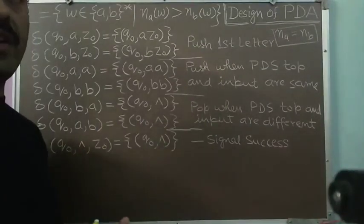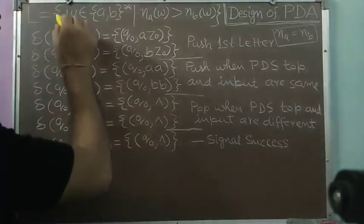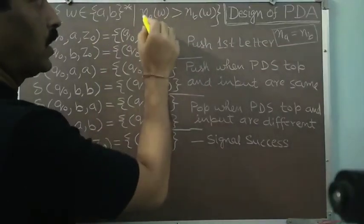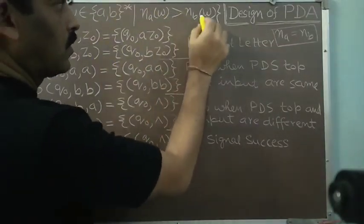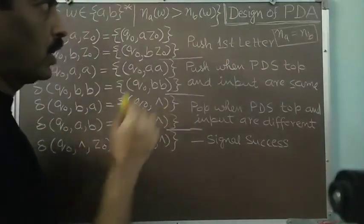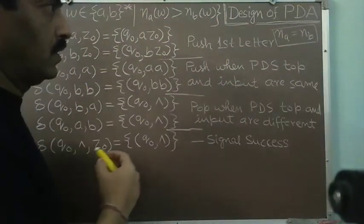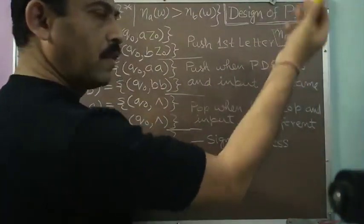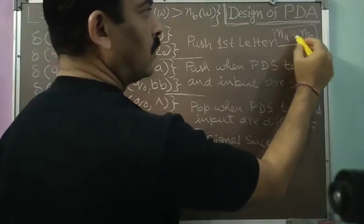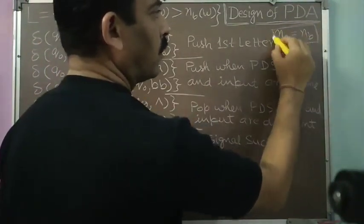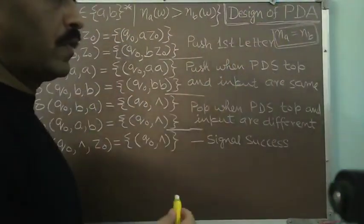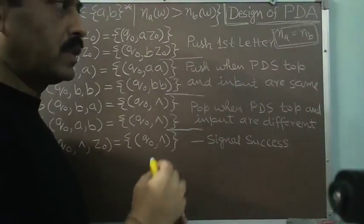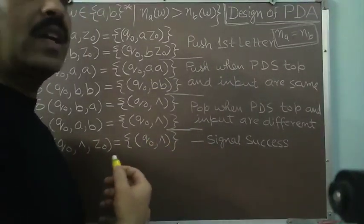Let us discuss the solution of our first problem: L is equal to all words w over a and b such that the number of a's in w is greater than the number of b's in w. Before going to its solution I will first review the solution we discussed in the last session where the number of a's were equal to the number of b's. In that solution, in the same state we were pushing when we were getting similar symbols and popping when we were getting different symbols.